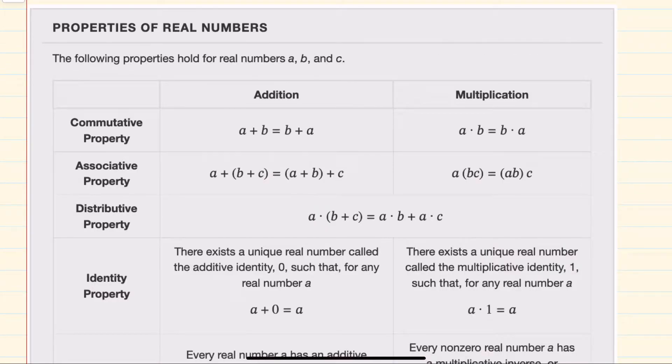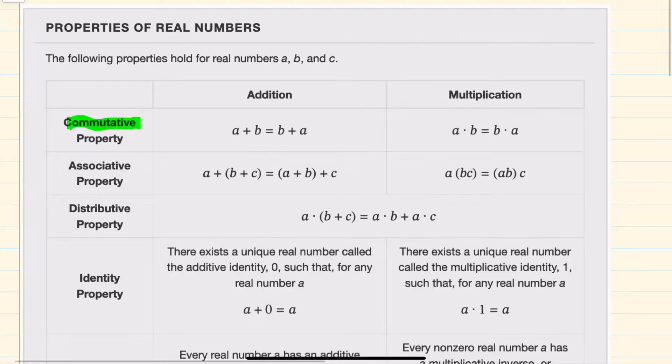I'll start by first reviewing those properties, starting with the commutative property. For addition, this property says that two values being added can be added in any order, so they can commute back and forth. Two plus four is the same as four plus two.